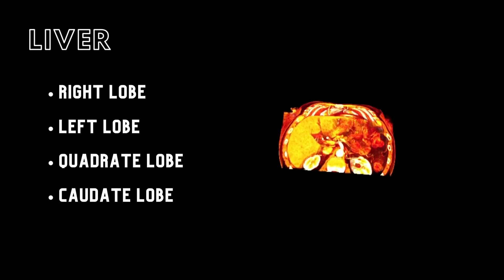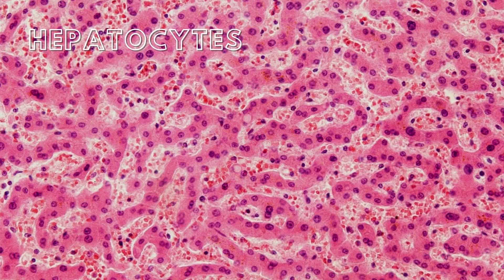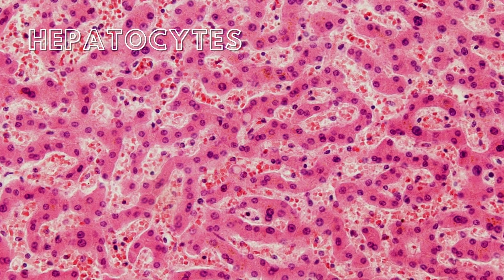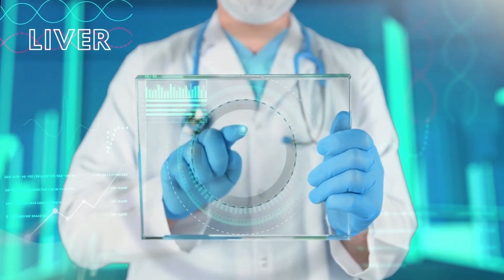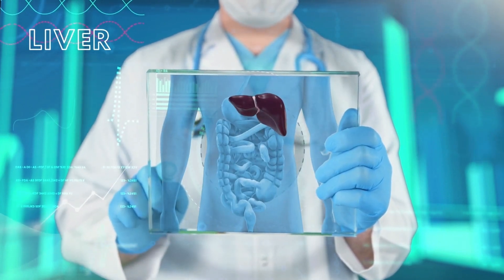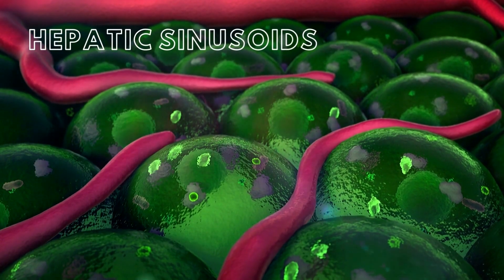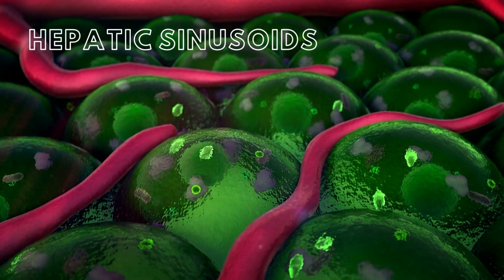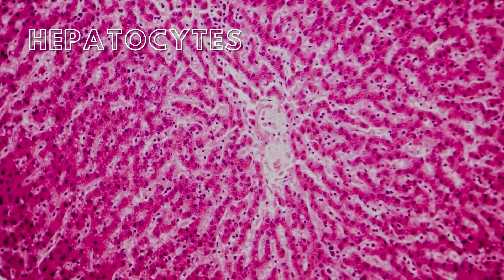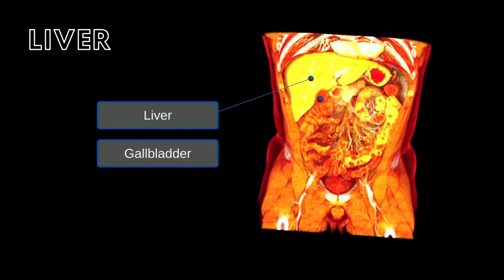The liver functions to filter blood of any toxins, process nutrients, and create bile. The liver performs these functions through hepatocytes, which are the main cells comprising the liver. The process begins with the hepatic artery and hepatic portal veins entering the liver at the porta hepatis. The blood vessels transport blood through a network of capillaries called the hepatic sinusoids, that allow the blood to pass by the hepatocytes, which filter the blood of toxins and absorb nutrients as the blood passes by.